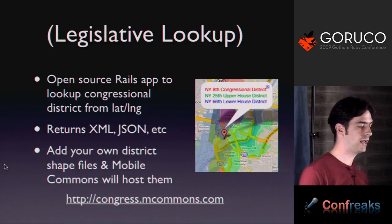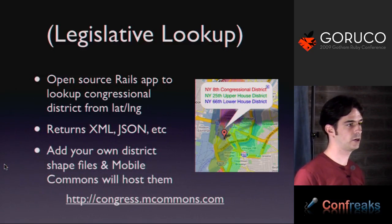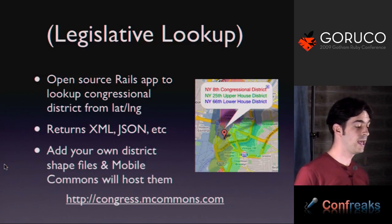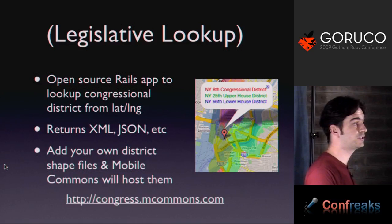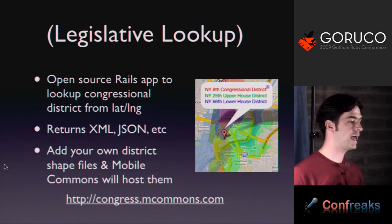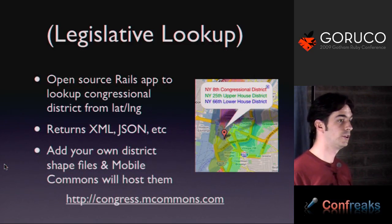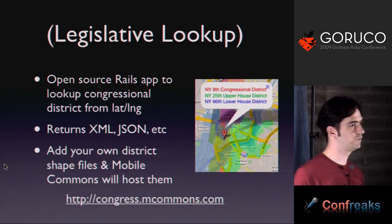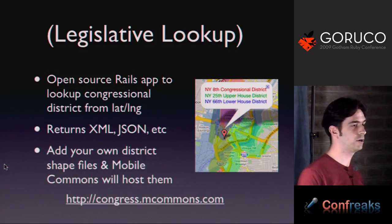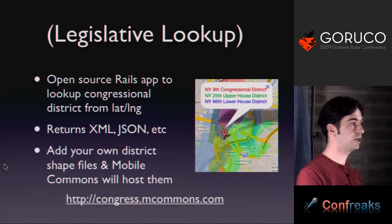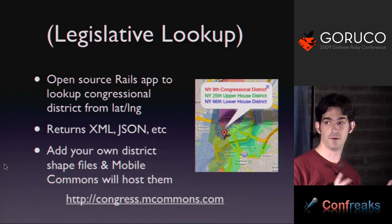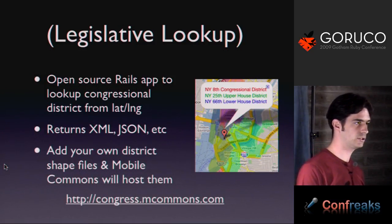How are we going to get this data? Mobile Commons has recently open-sourced our legislative lookup tools — it's an open source Rails app with a hosted version that lets you pass in a lat/long and get back specific legislative district information. I also bring it up because we're interested in adding more data sources. If any of you have been on data.gov, which went live this week, and you have projects requiring location information you'd like hosted as an API, just let me know. It's a migration to get new data into the app.